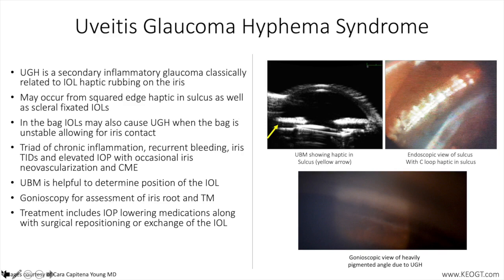The definitive treatment involves surgical repositioning or exchange of the intraocular lens. Combining glaucoma surgery with IOL repositioning or exchange is often a hard issue to address and must consider the specific patient as well as the overall staging of glaucoma, along with clinical examination of the angle to ascertain likelihood of the drainage system recovering over time.